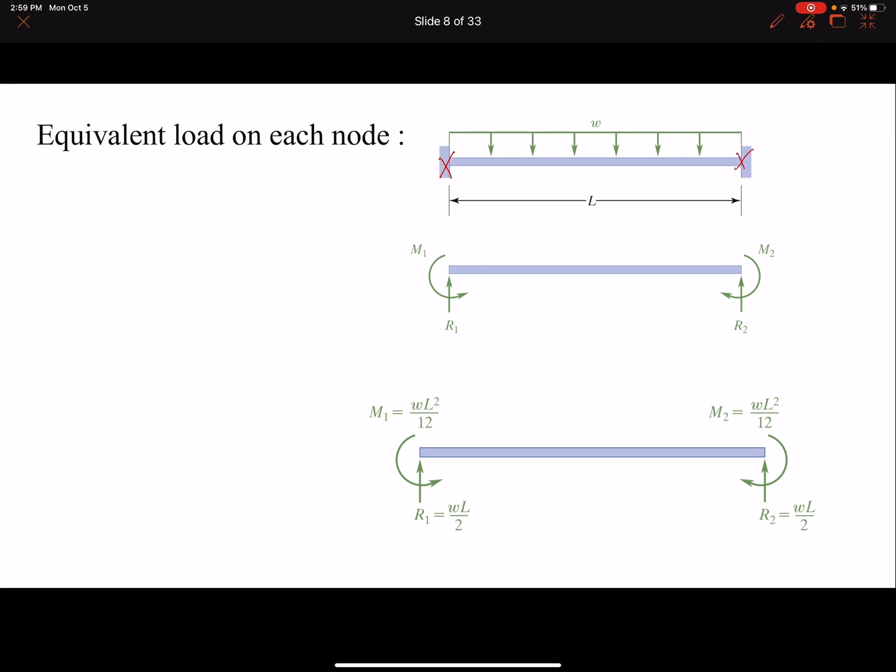One way to find the equivalent load on each node is to find the reaction forces and then just flip the signs, and that would be our equivalent load on each node. So we can think of it: we have two nodes, each node is going to have a reaction force R1 and M1.